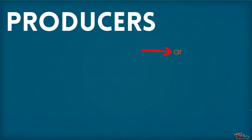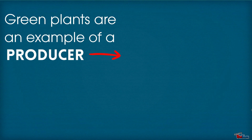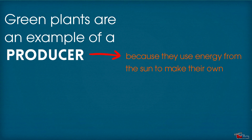Producers are organisms that make their own energy. Green plants are an example of a producer because they use the energy from the sun to make their own food.